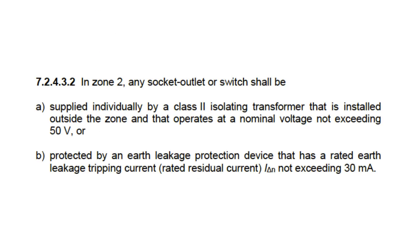Now if we want to plug our pool pump into a socket outlet — a normal plug — clause 7.2.4.3.2 tells us that either the voltage must be stepped down from 220 volts to 50 volts, or the socket must be protected by an earth leakage device with a trip current no more than 30 milliamps. This means that if current is flowing in any component other than the wires it's supposed to flow through, and if this current is greater than 30 milliamps, the breaker will trip and disconnect all the power.